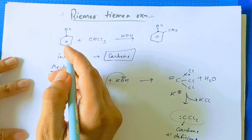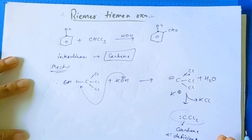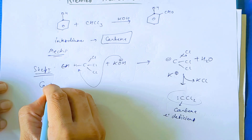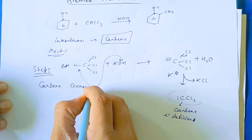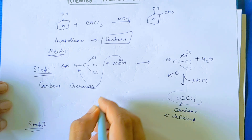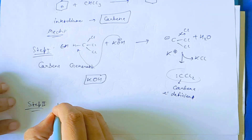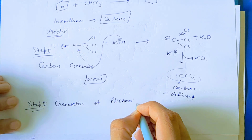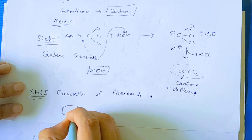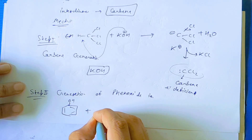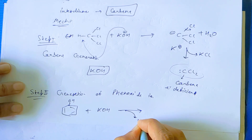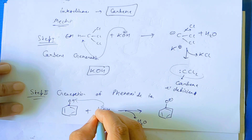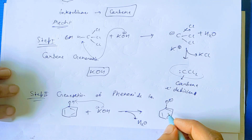This carbene, with phenol that is electron rich, will show an electrophilic substitution reaction. This is step 1 — carbene generation. One mol of KOH is consumed here. Step 2 is generation of phenoxide ion. Here is phenol — when we use another mol of KOH, there will be a release of water plus phenoxide ion. This OH⁻ will take this hydrogen and give us a stable anionic species, that is phenoxide anion.